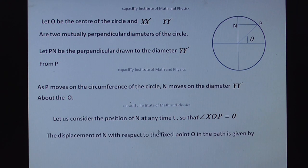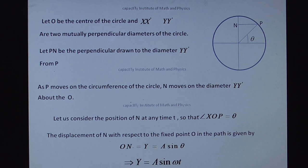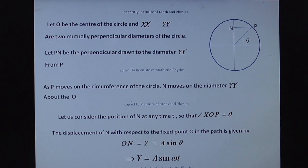The displacement of N with respect to the fixed point O in the path is given by O, N equal to Y equal to A sine theta, or we can write Y equal to A sine omega T. So this is the displacement equation, Y is equal to A sine omega T.